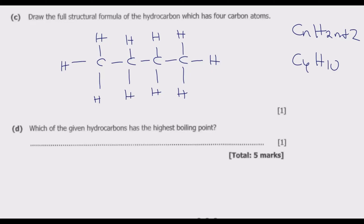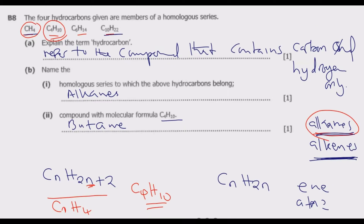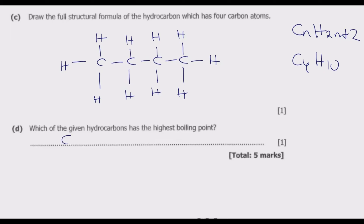Question D asks which of the given hydrocarbons has the highest boiling point. We have four hydrocarbons ranging from smallest to biggest. The boiling point increases as the carbon chain length increases — the bigger the molecule, the stronger the intermolecular forces, and hence the higher the boiling point. So the one with the highest boiling point is the largest, which is C10H22.